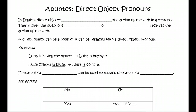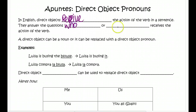To start out, let's connect this to the English language. We have direct objects and direct object pronouns in English as well. Direct object pronouns in any language — English or Spanish — receive the action of the verb in a sentence. They answer the questions: who or what receives the action of the verb? A direct object can be a noun, but it can also be replaced with a direct object pronoun, which is what we are going to practice today.